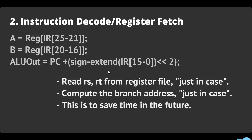What this does is take your PC, which is your current address, and add to it the sign-extended and left-shifted immediate, then store that result into ALU out. So essentially, just in case it's a branch, the branch target is already computed and ready in ALU out.